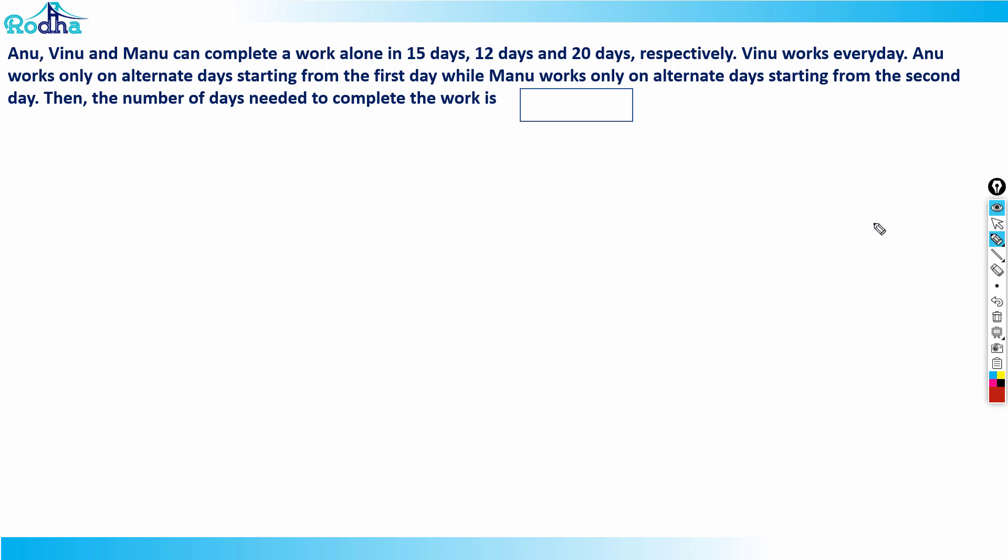Okay, so next question guys, this is from Time and Work, CAT 2021 Slot 1. This question says that Anu, Vinu, and Manu can complete a work in 15 days, 12 days, and 20 days respectively.